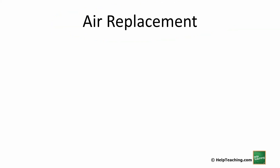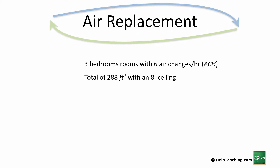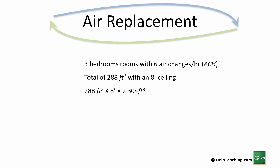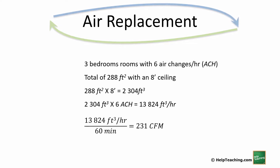For three bedrooms with 6 air changes per hour, I've combined the total square footage instead of breaking it into three separate rooms. We have a total of 288 square feet with an 8-foot ceiling. Calculating square feet times height gives us a volume of 2,304 cubic feet. Six air changes brings us to 13,824 cubic feet per hour. Dividing by 60 gives us 231 cubic feet per minute.